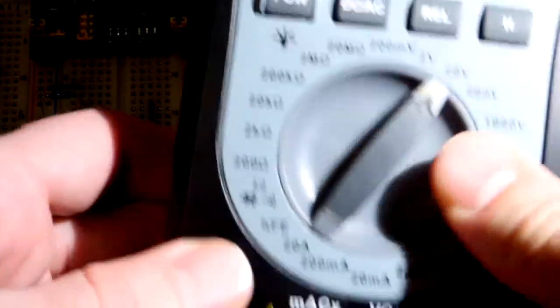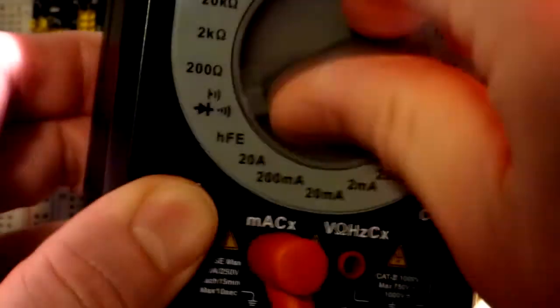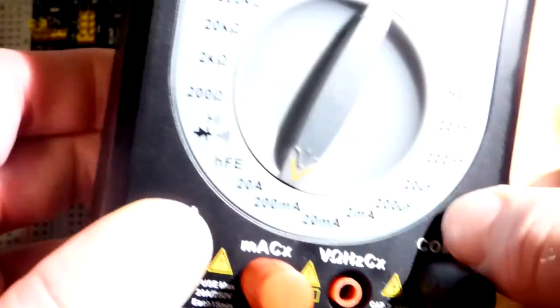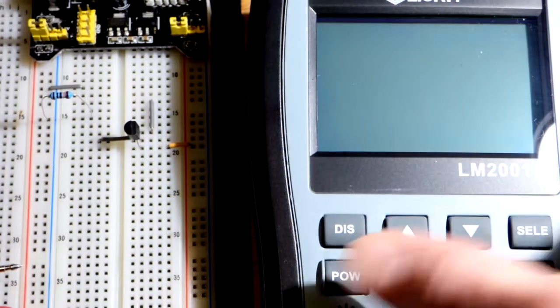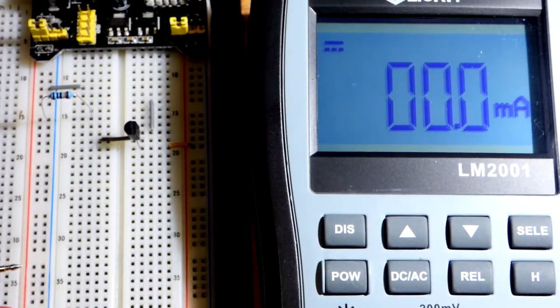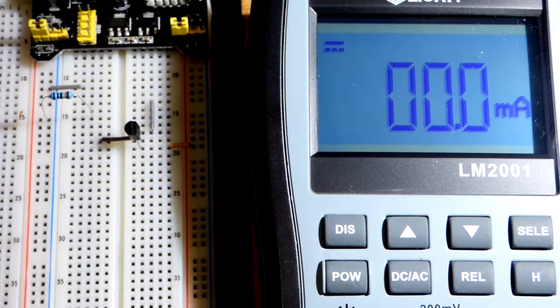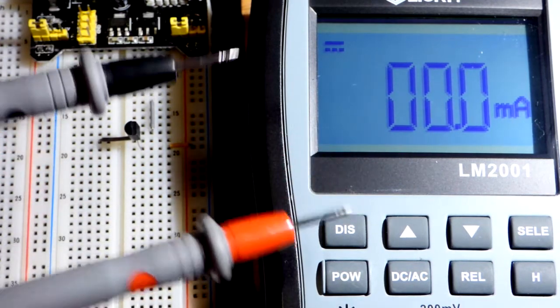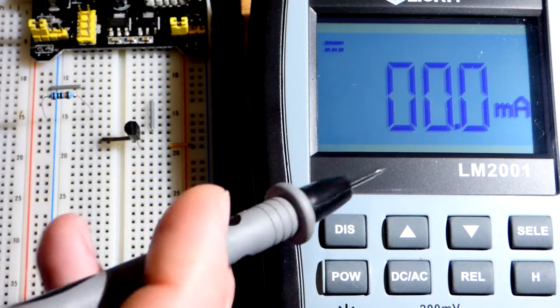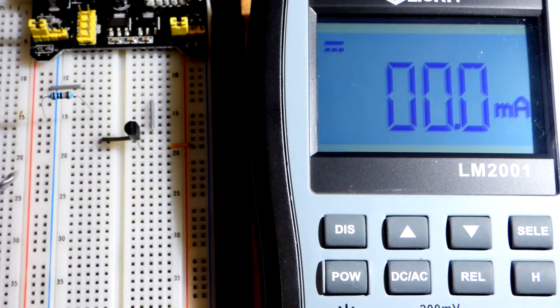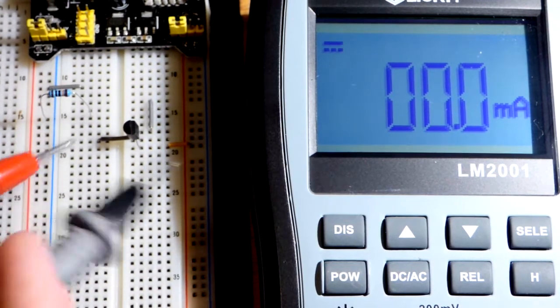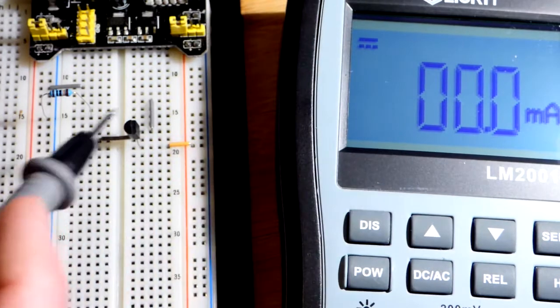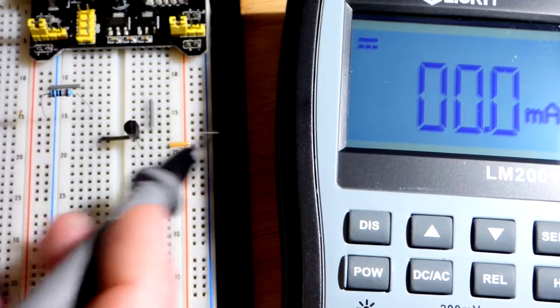We're going to measure current. We do have to move the red probe to the milliamp setting, and we should go high to begin with. It's going to be a lot less than 2 milliamps, but we should start with 20 milliamps, because measuring current is a bit tricky. The current has to flow through the meter. You're in the most danger of damaging the meter when you are measuring current.